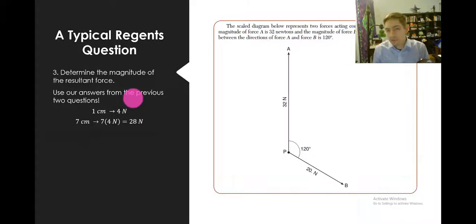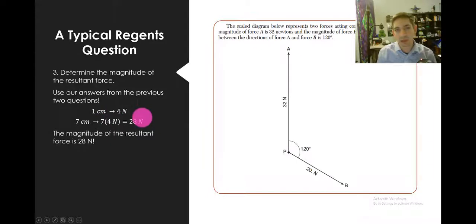So 7 centimeters, all we have to do is multiply by our scale factor. Since our scale factor is 4, we multiply 7 by 4, and we get 28 newtons. And then we conclude the magnitude of the resultant force is 28 newtons.